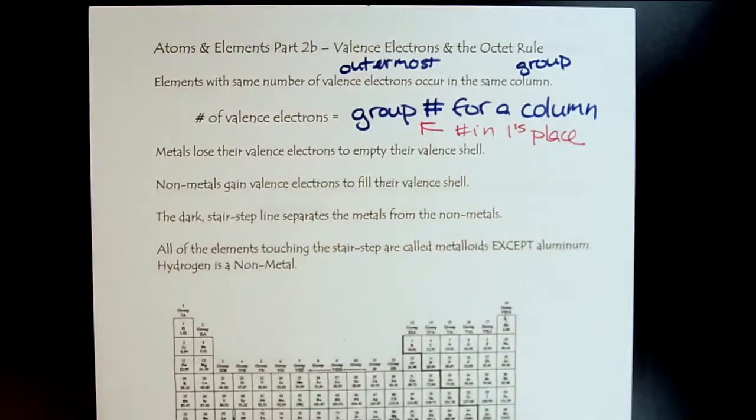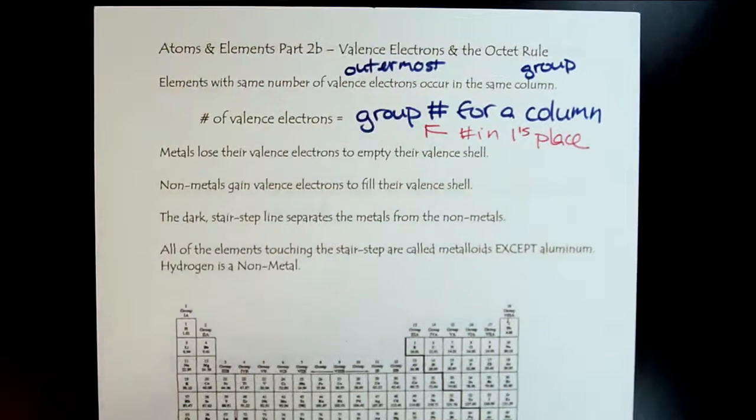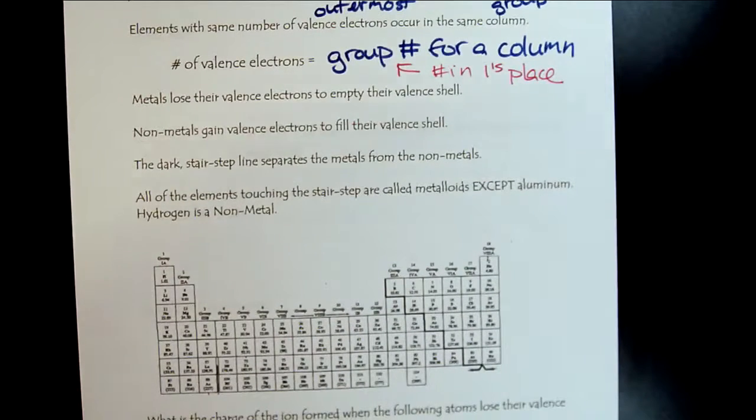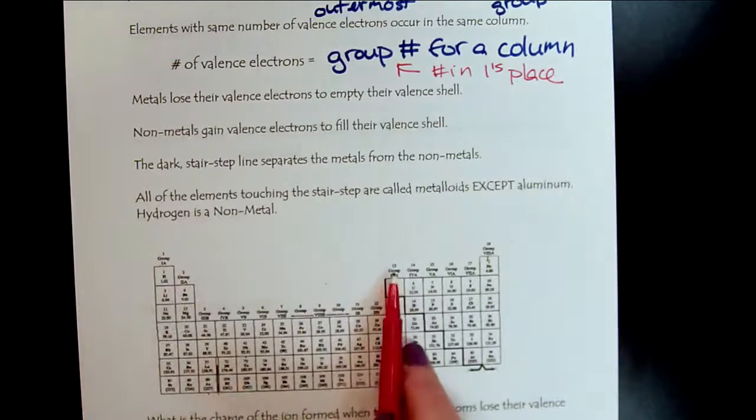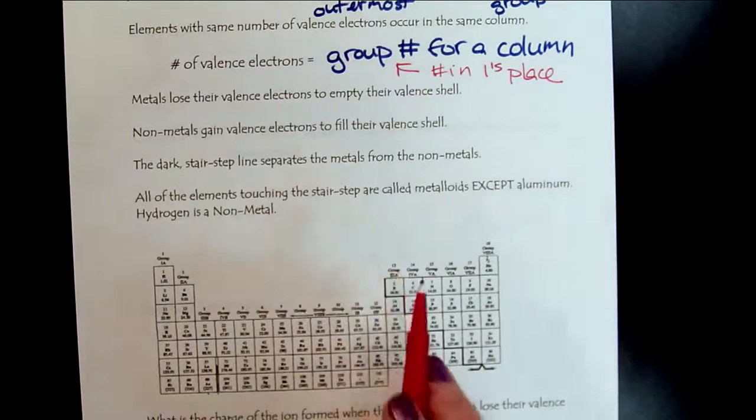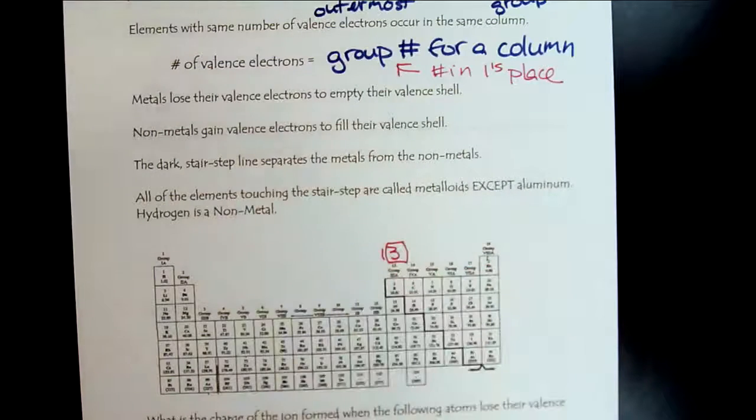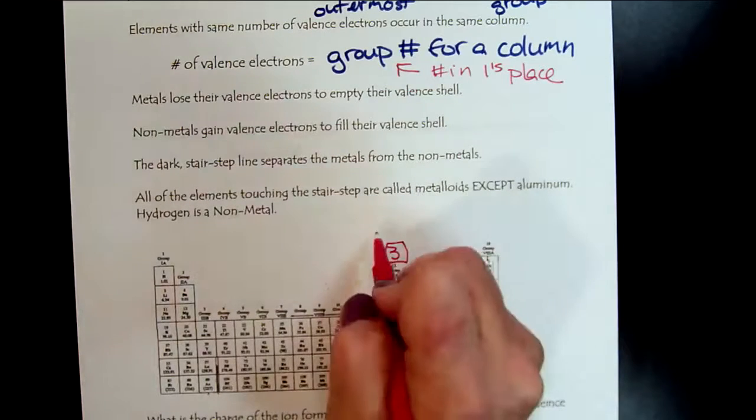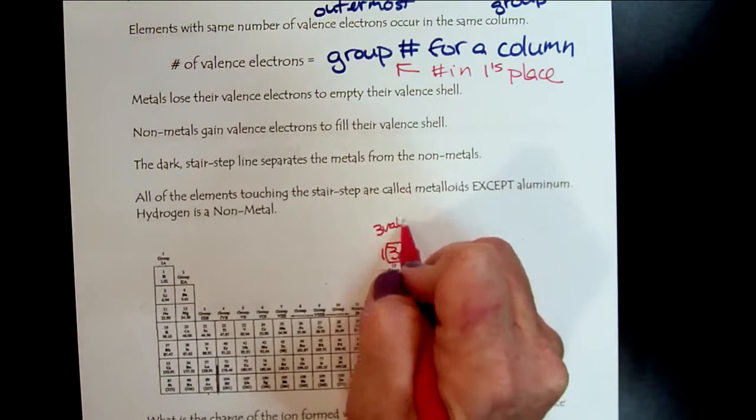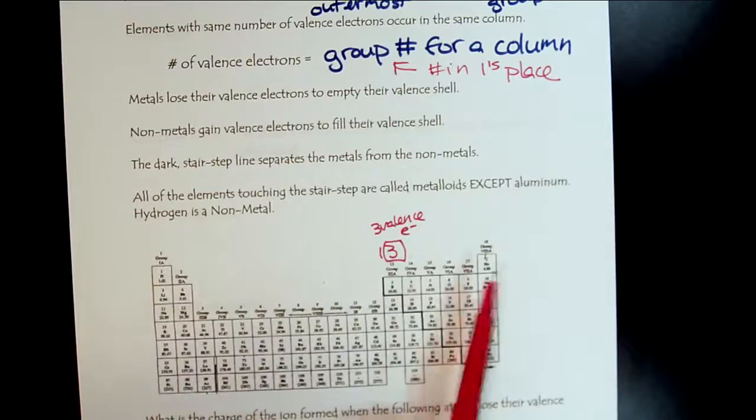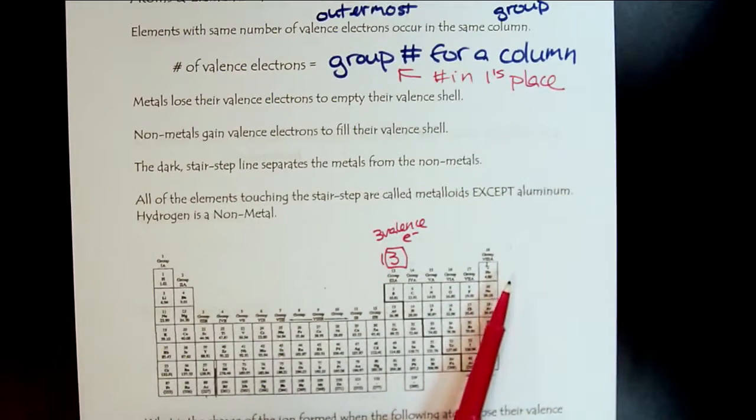You have your periodic table. For example, where it says group 13, it's the three in the ones place. So this group would have three valence electrons. Anytime we look at the top of the periodic table we have the group number, we know how many valence electrons there are.